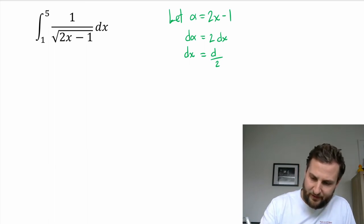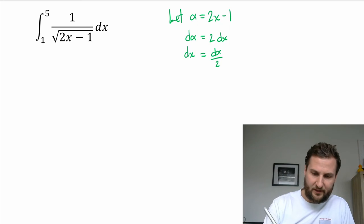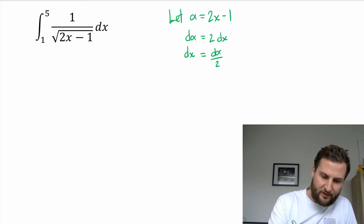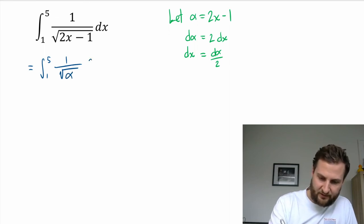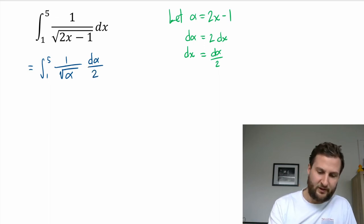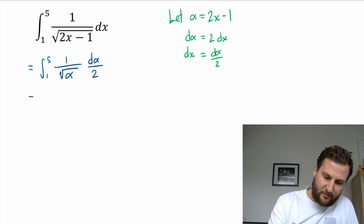Alpha might not have been the best letter to pick, but that's where we are, so let's see how we go. Okay so my new integral, keep my limits, going to be 1 over square root of alpha, and then instead of dx I have d alpha by 2.